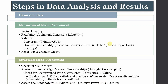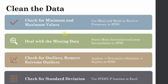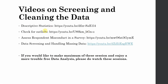Finally, we assess the explanatory and predictive power. As for how to clean the data: the first step is to check for minimum and maximum values; the second step is to deal with missing data; then check for outliers and remove extreme outliers; and check for respondent misconduct using standard deviation. All these steps are very important — if you do not clean your data, your results are not reliable.